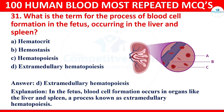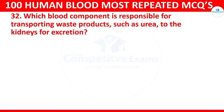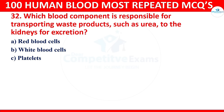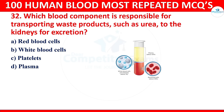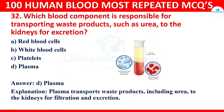Question 32: Which blood component is responsible for transporting waste products such as urea to the kidneys for excretion? Options: red blood cells, white blood cells, platelets, or plasma. The correct answer is plasma. Plasma transports waste products including urea to the kidneys for filtration and excretion.